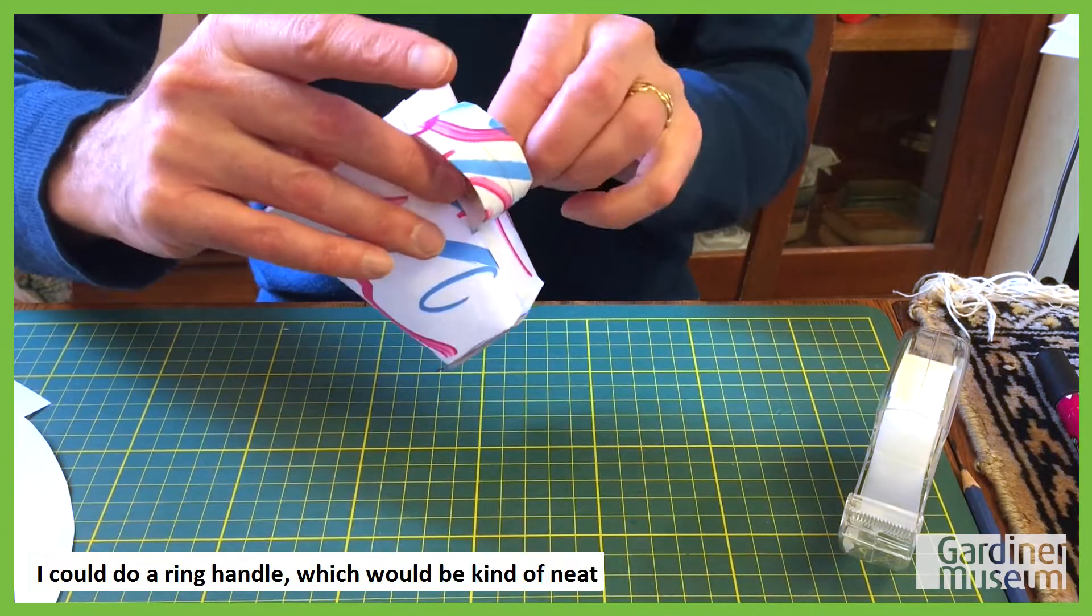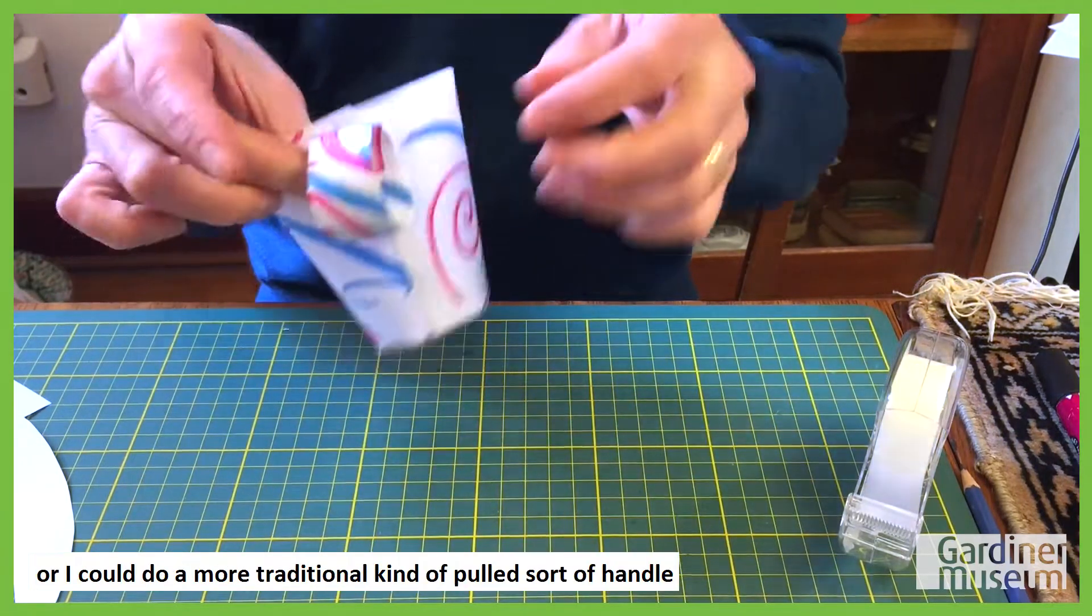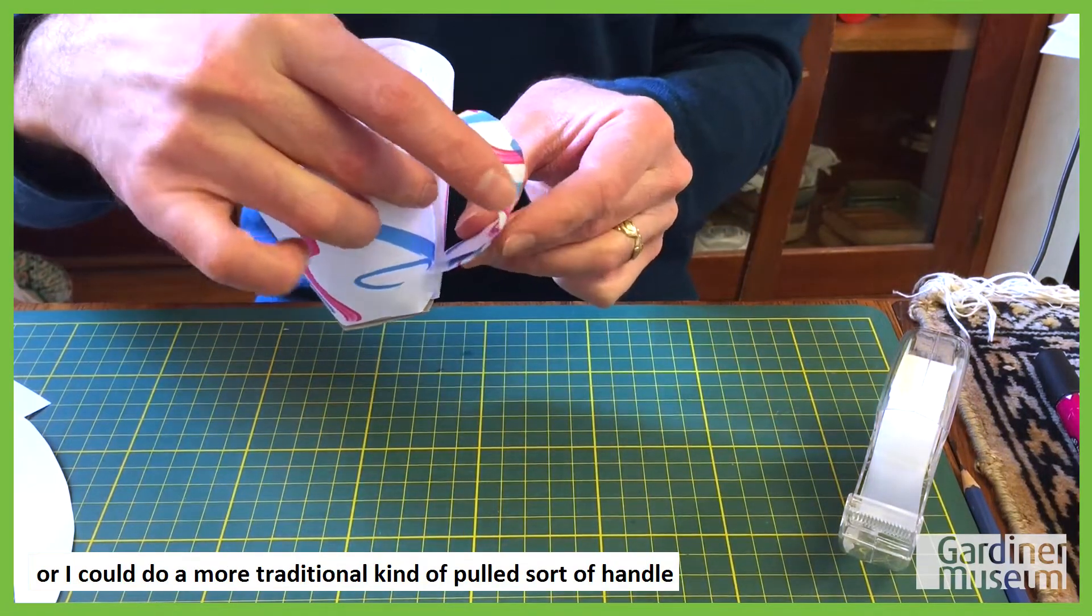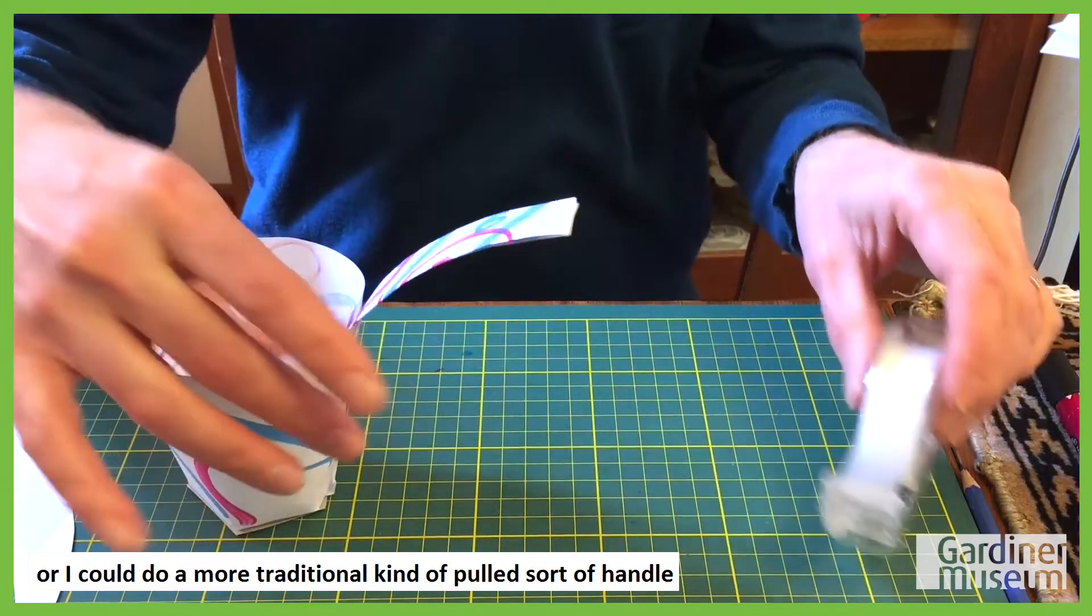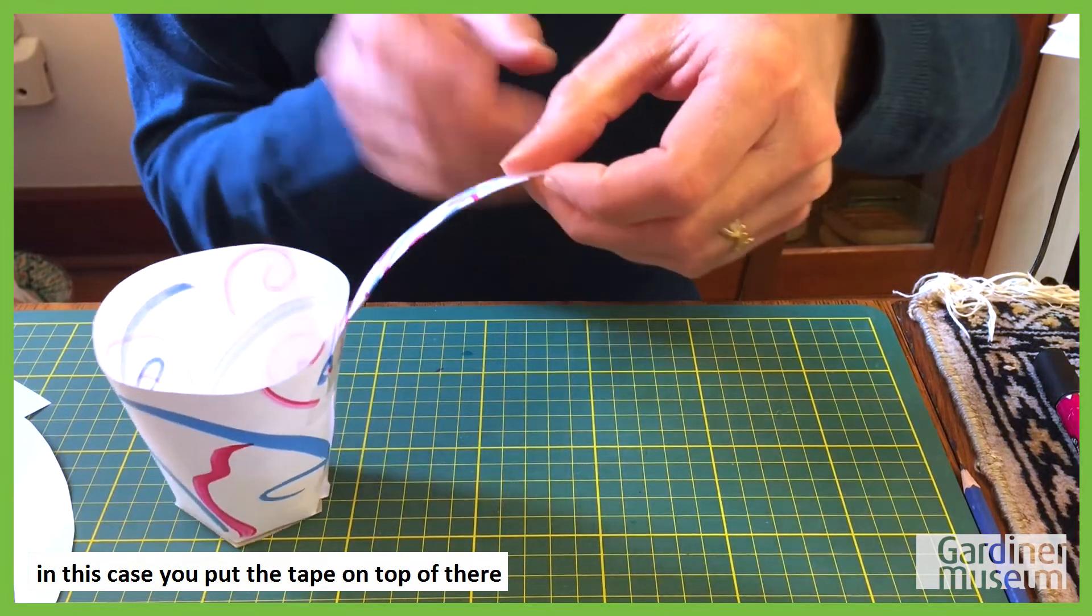And I'll just show two handles. I could do a ring handle which would be kind of neat, put the tape inside of there. Or I can do a more traditional kind of pulled sort of handle, and that's what I'll do for here. In this case you put the tape on top of there.